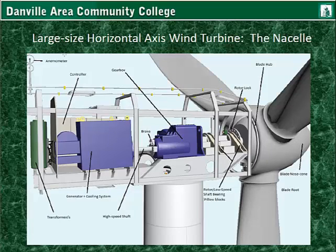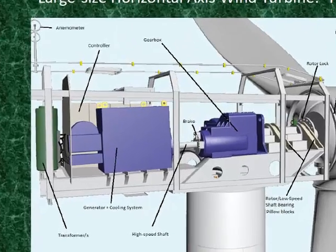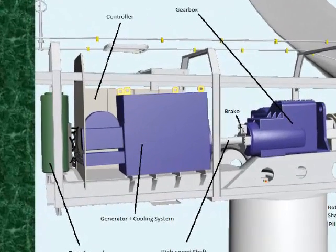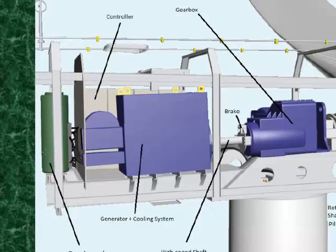Looking closer at the top, you can see the anemometer and control cabinet. At the front are the nose cone, blades hub, and rotor lock — which allows maintenance techs to lock the rotor into place. Inside are pillow blocks that hold the bearings for the low speed shaft, the gearbox that increases RPM, the generator and cooling system, and the transformers — sometimes located in the nacelle, sometimes at the bottom, depending on the design.